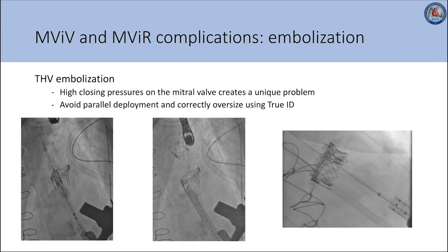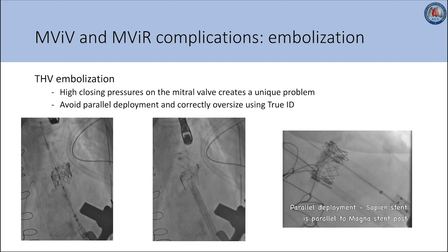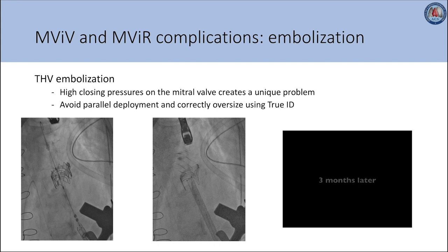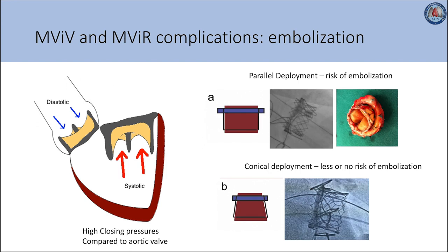The second complication is the risk of embolization. Due to higher closing pressures on the mitral valve compared to the aortic valve, parallel deployment can lead to atrial migration or embolization of the transcatheter heart valve, as seen in the accompanying video clips. Therefore, conical deployment is more favorable than parallel deployment. Correctly oversizing using true ID will also help avoid embolization. To combat the higher closing pressures unique to the mitral valve, conical deployment is preferred over parallel deployment due to minimal or no risk of embolization, as shown in the accompanying figure.